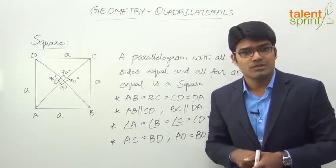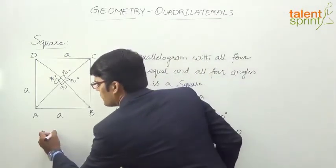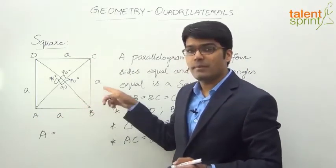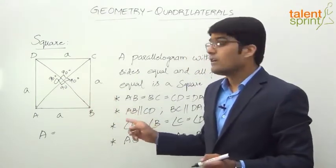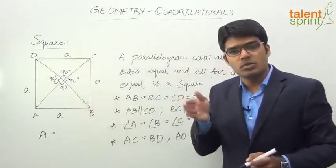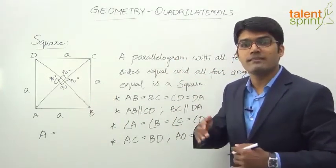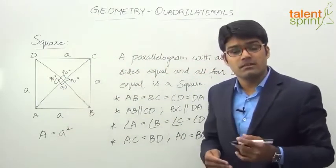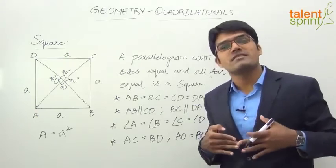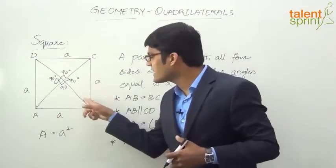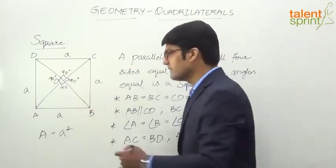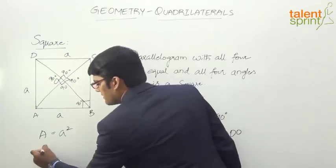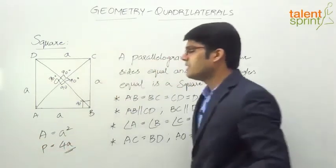Now area — for any quadrilateral, the area can be taken as base into height. The base is A and the height is also A, since the angle is 90 degrees and the adjacent sides are perpendicular. When adjacent sides are perpendicular, the side itself becomes the height, which is A. So base into height gives A into A, meaning area equals A squared. Alternatively, area equals the product of two adjacent sides into the sine of the included angle: A into A into sine 90, and since sine 90 is 1, area equals A squared. The perimeter is A plus A plus A plus A, which equals 4A.